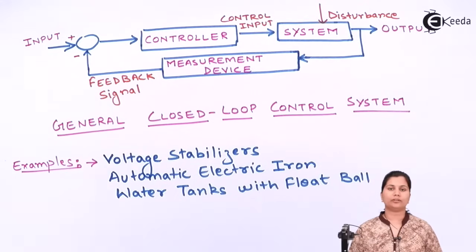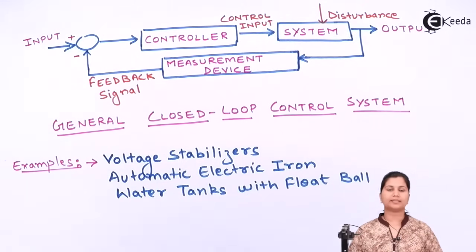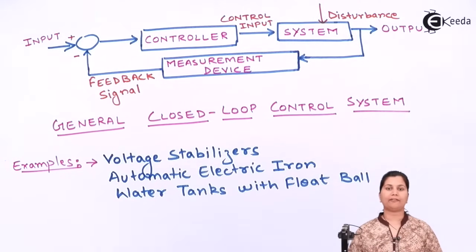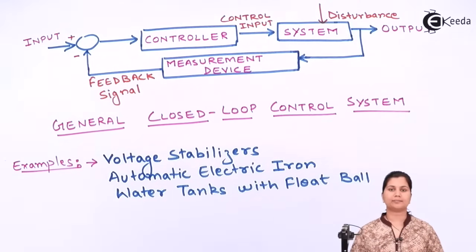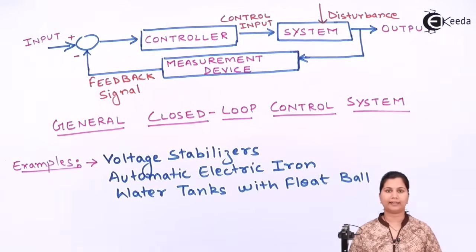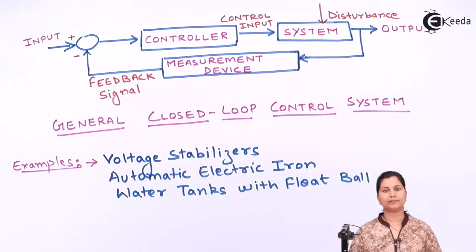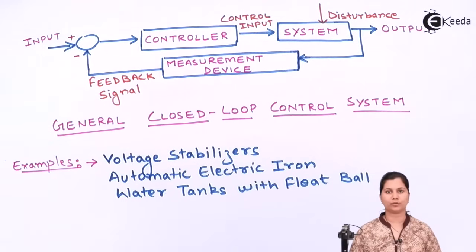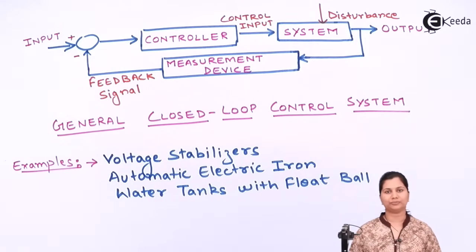In this video we have studied about open-loop control systems and closed-loop control systems. We represented these systems as general block diagrams and then saw some examples of open-loop and closed-loop control systems. I hope that you have clearly understood the topic. Thank you.